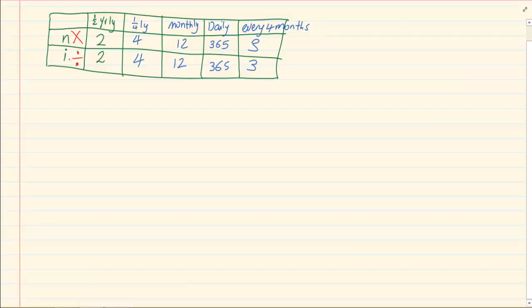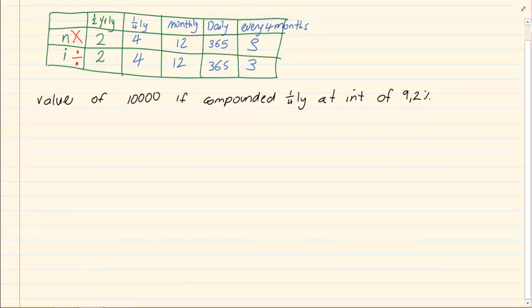Let's take the following example. Calculate the value of R10,000 if it was compounded quarterly at an interest of 9.2%. When we start, the basic rule is to write down your P. Your P is R10,000. Your A we don't have, that's what we want to calculate. Our interest is 9.2 over 100 and our N.